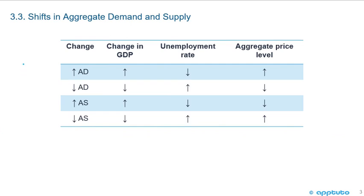We have a little chart here to summarize, and this is a good example of how you can sometimes increase your memorization. We're looking at the change in aggregate demand and aggregate supply, with columns for change in GDP, the unemployment rate, and the aggregate price level. An increase in aggregate demand, as you would expect, will increase GDP, decrease the unemployment rate, but increase pressure on the price level.